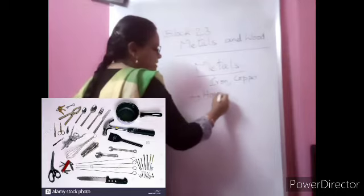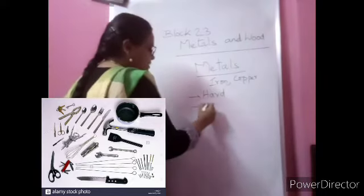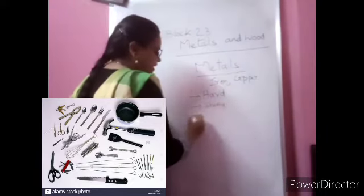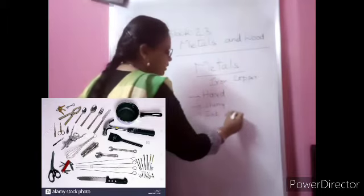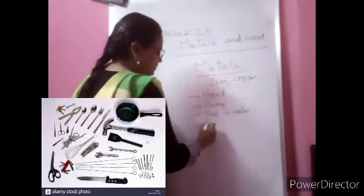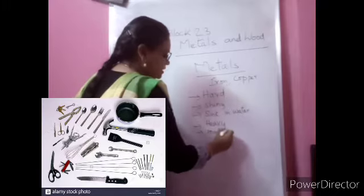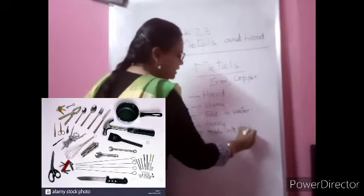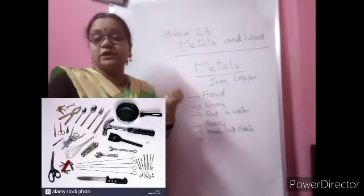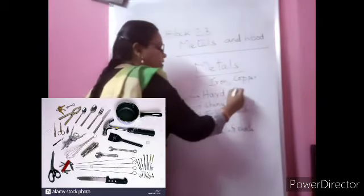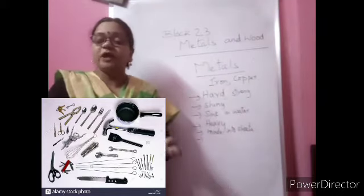Metals are hard. An iron nail — can you break it? It is not easily breakable. Most metals are shiny — you can see how shiny they are. They will sink in water when you drop them. Metals are heavy. They can be made into thin sheets — because of that your grills and many things can be bent and shaped. Metals are very hard and very strong — that is why window bars are made up of iron.